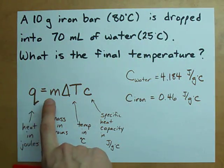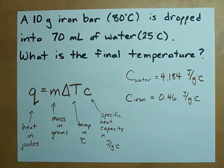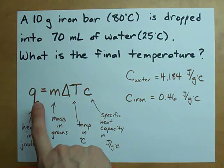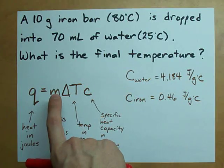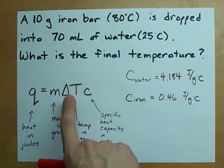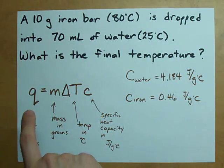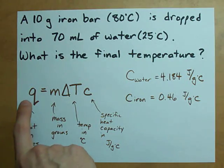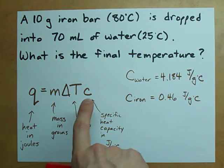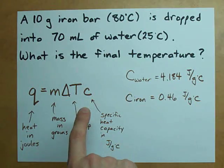This formula, Q equals M delta Tc, tells you how much heat is exchanged when a certain mass undergoes a certain temperature change. Now, to figure out how much actual heat was transferred, we need something called the specific heat capacity, and it's different for everything.